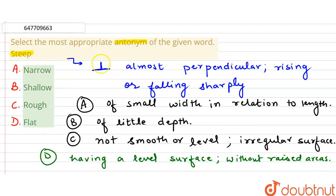So, steep is vertical, almost perpendicular. Flat is horizontal. Exactly. So, option D is our correct answer because it is the most appropriate antonym of the given word. Thank you.